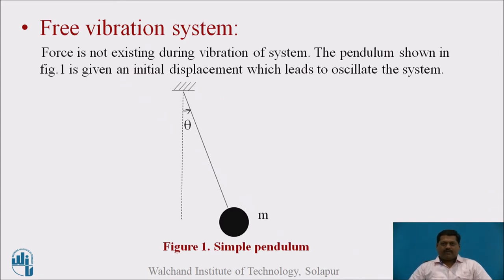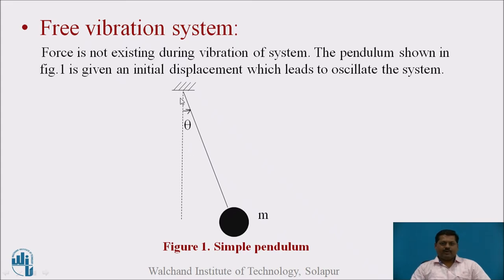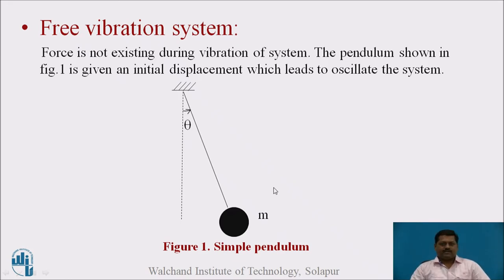Now let us see what is meant by a free vibration system. One example shown here is a simple pendulum, with an inextensible string and a lumped mass. This vertical line represents the neutral position of the pendulum. When an initial displacement is given to the pendulum, it will start to oscillate. During vibration, no external force is acting, that is why it is called free vibration. For free vibration, an initial displacement is required.